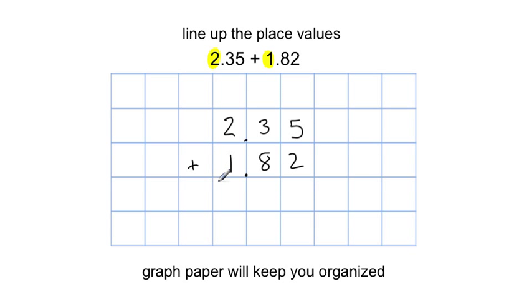And we're going to be adding those together. And again, organization's the key. Make sure your ones are lined up. If you line up your ones, then your tenths will be lined up, and your hundredths will be lined up. And then at that point, it's a simple addition. 5 plus 2, 7.